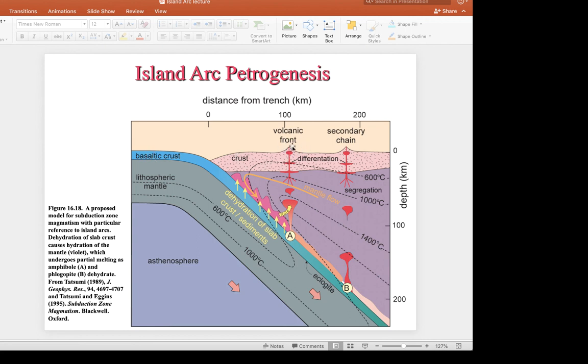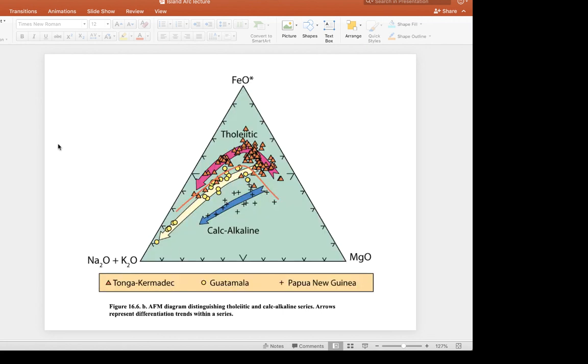Or are they ancient continental crust that formed at a volcanic front? But we can use diagrams like this to figure out that kind of tectonic environment. So we'll see that a little bit later.